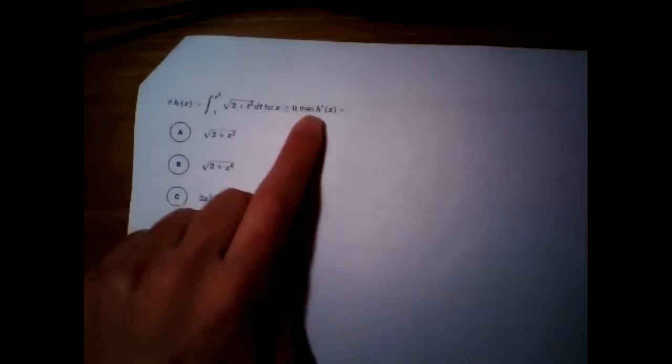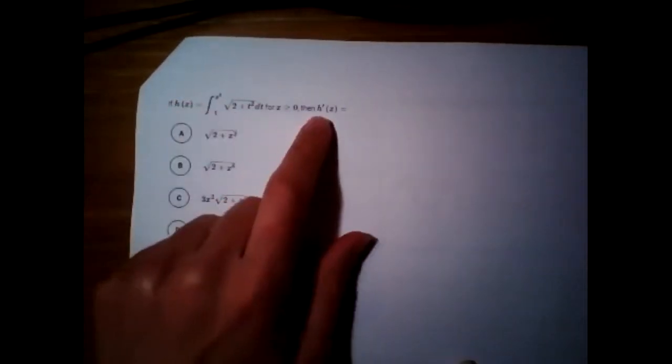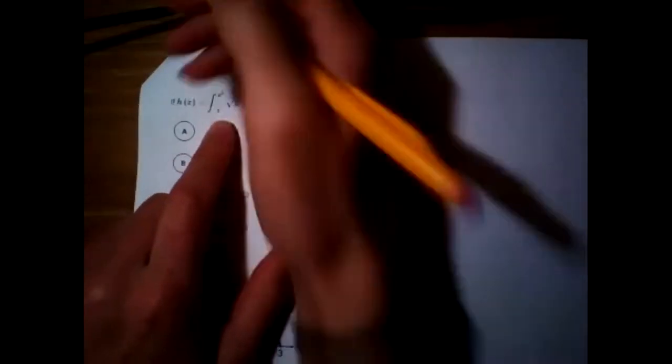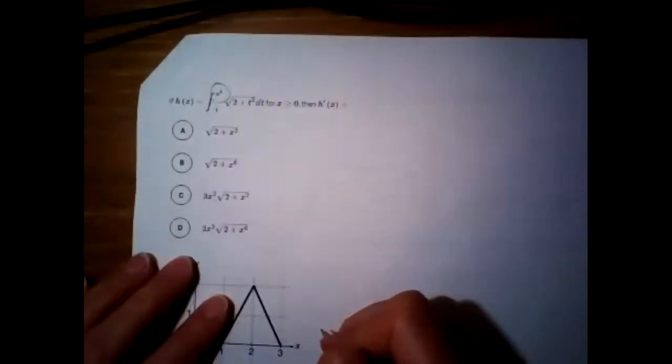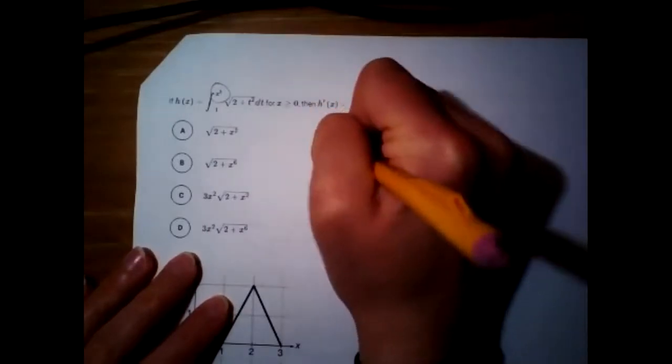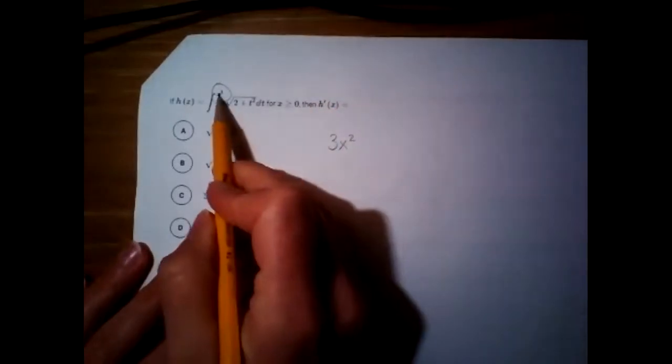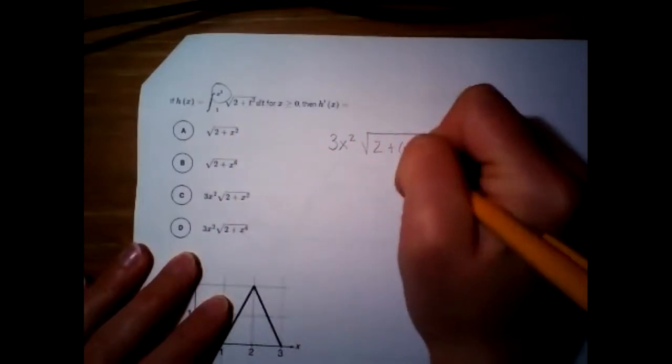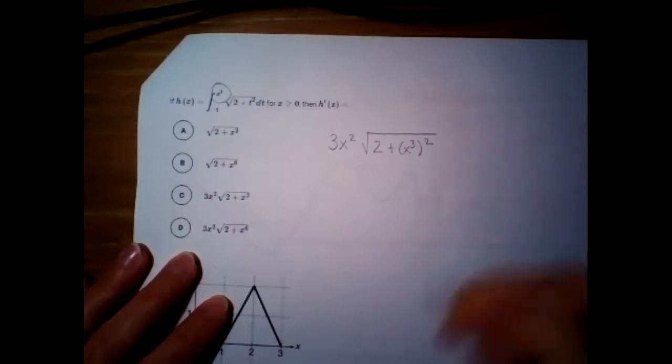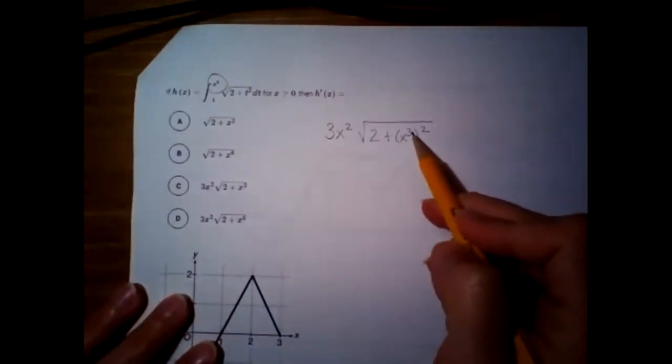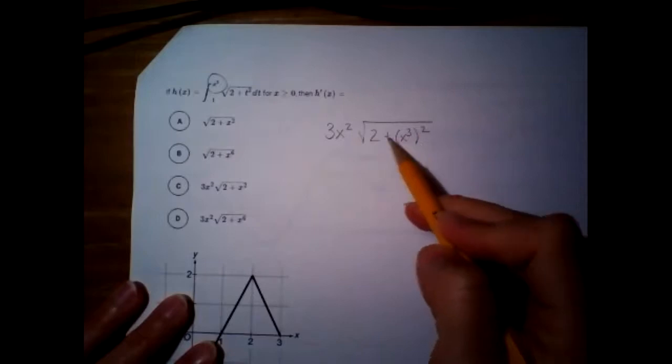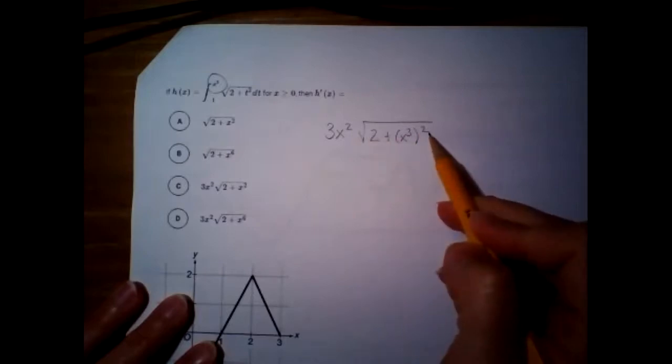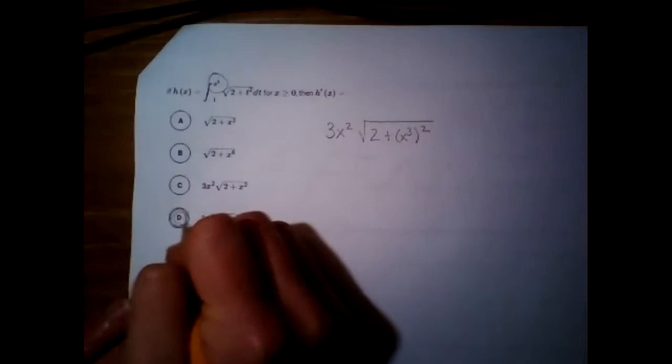Right here, we're given an accumulation function and we want the derivative. So, instead of writing d dx out front, they wrote it out like find h prime. Now, this one's going to involve a chain rule because you have an x cubed there. So, I'm going to do the derivative of that. It'll be 3x squared. And then you just take x cubed and plug it in for t. And so, whenever they simplified that. So, whenever you do a power to a power, you multiply. So, it's going to be 2 plus x to the 6 underneath of there. So, d is the answer for that one.